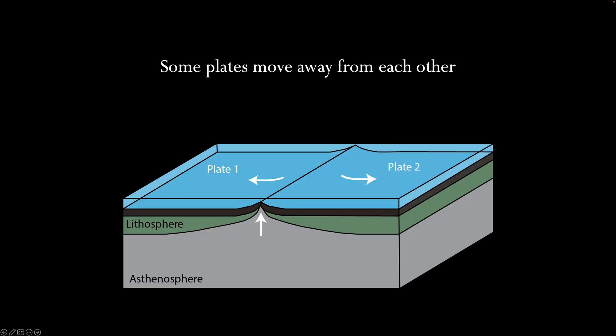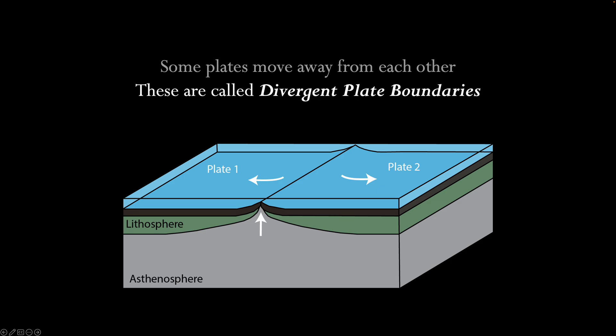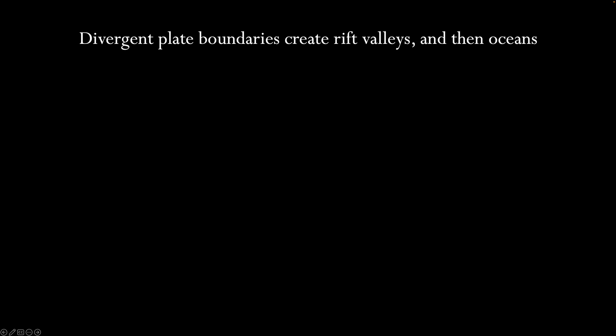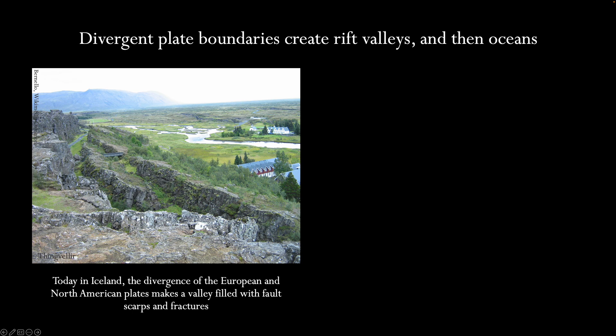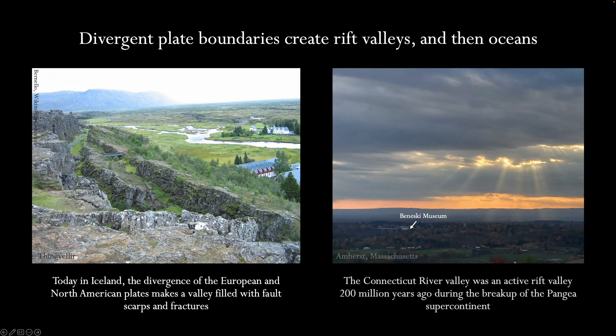In other places, the plates are moving away from each other — these are called divergent plate boundaries. This diagram shows a divergent plate boundary where two plates separate and magma flows up between them to form new crust. Divergent plate boundaries create rift valleys and then oceans. Today in Iceland, the divergence of the European and North American plates makes a valley filled with fault scarps and fractures. Amherst lies in a former rift valley, which formed 200 million years ago during the breakup of the Pangaea supercontinent and the opening of the Atlantic Ocean.